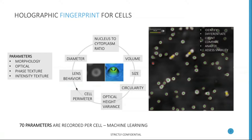The holographic fingerprint for cells is basically a combination of 70 parameters recorded on a single cell level, with four subcategories. There are the morphological parameters — nucleus-to-cytoplasm ratio, cytoplasm ratio, volume, size, circularity, cell perimeter, and diameter. All those parameters are taken into account, but we also take into account optical parameters, phase texture, and intensity texture parameters.